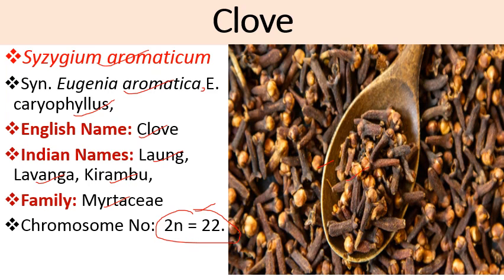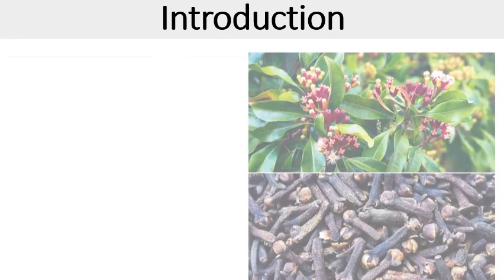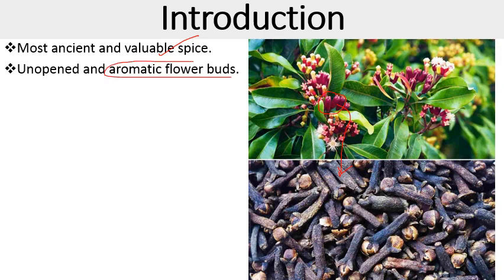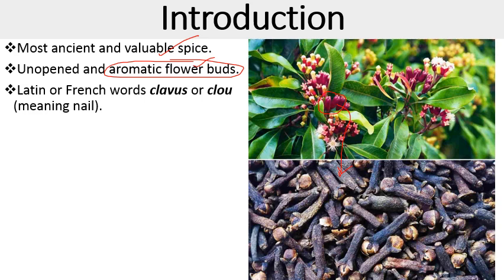The dried buds are what we use as a spice. The word 'clove' is derived from a Latin or French word 'clavus' which means nail, because the shape of the bud resembles a nail. Clove is one of the most ancient and valuable spices. For commercial purposes we use the unopened floral buds - these are dried and commercially sold. The world production of clove is around 80,000 tons per annum.